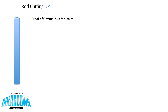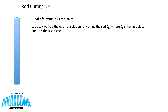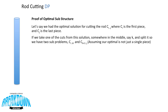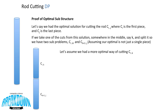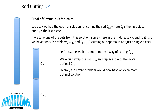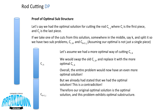This problem has optimal substructure — let's go over the proof. Let's say we had the optimal solution for cutting the rod c[i] to c[j], where c[i] is the first piece and c[j] is the last piece. If we take one of our cuts somewhere in the middle, say k, and split it into two sub-problems c[i to k] and c[k+1 to j], assuming the optimal is not just a single piece, then if we had a more optimal way of cutting the top part c[i to k], we would swap it in. Overall the entire problem would now have an even more optimal solution — but we already stated we had the optimal, so this is a contradiction. Therefore our original optimal solution is the optimal solution, and this problem exhibits optimal substructure. Proven.